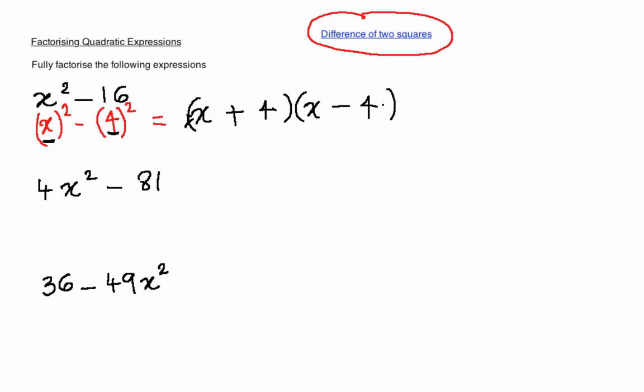Let's have a look at the second example now. In a similar way to the first one, I am going to write this as a squared number. This is actually 2x all squared. 2 times 2 is 4, x times x is x squared. Subtracting 81 is actually 9 squared.